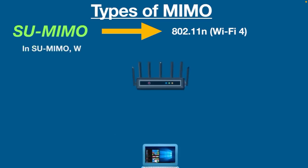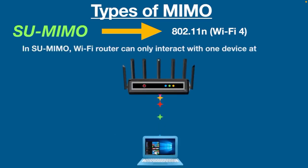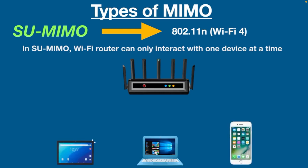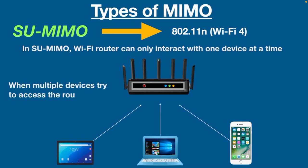In Single-User MIMO, a Wi-Fi router can only interact with one device at a time. It doesn't mean this technology cannot support multiple devices — it does support them — but only one device can communicate with the router at a time. So if you have multiple devices connected to your router, each of them needs to wait for its turn to communicate with the router.